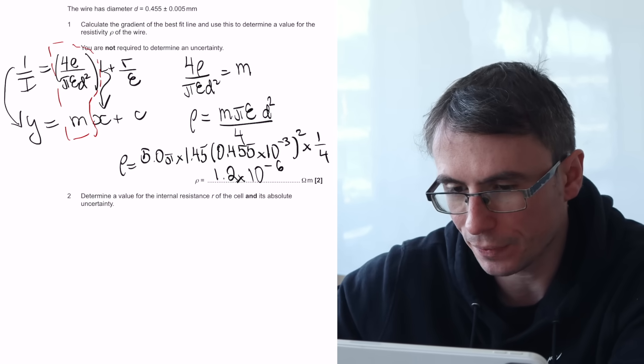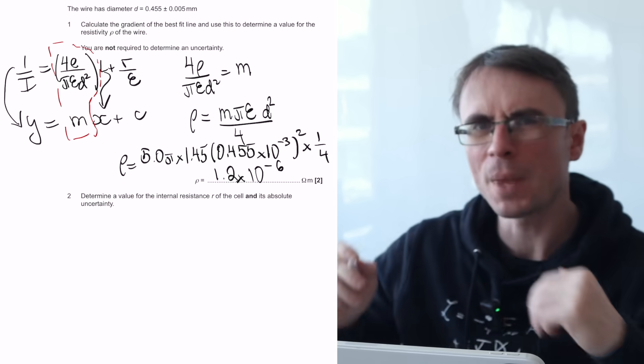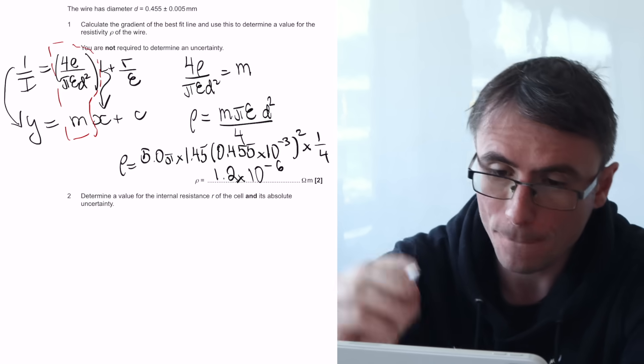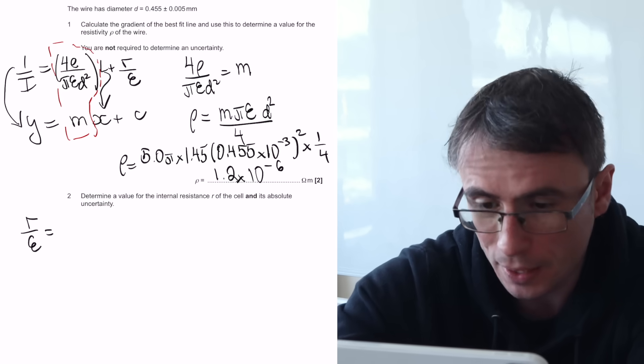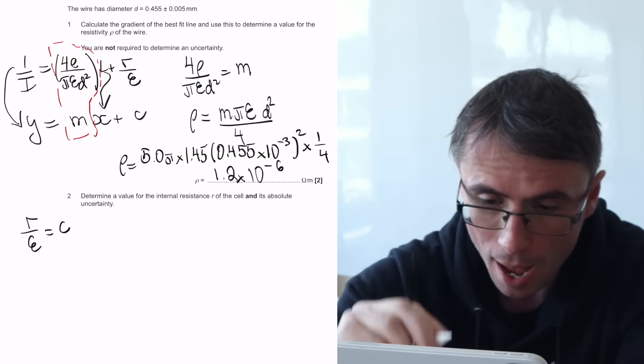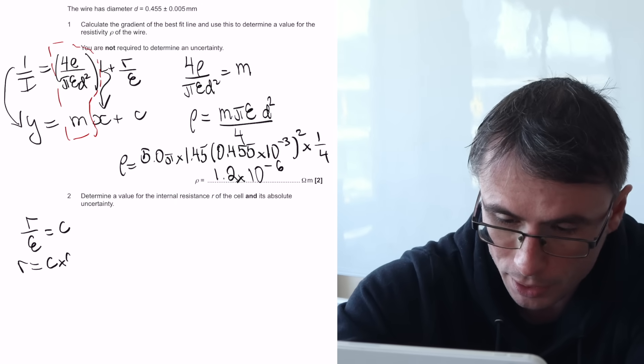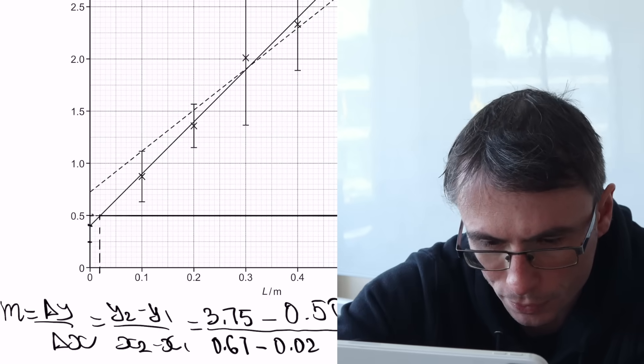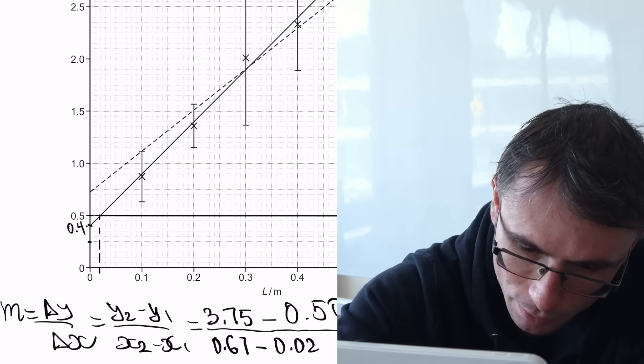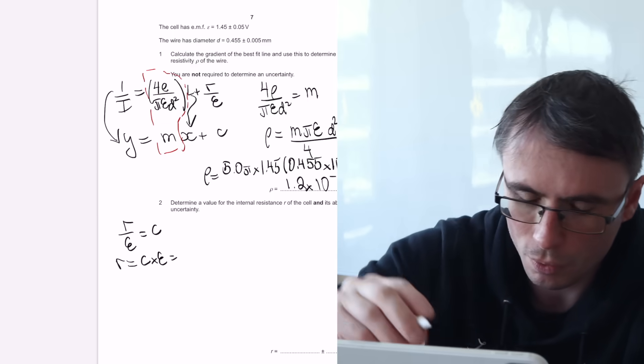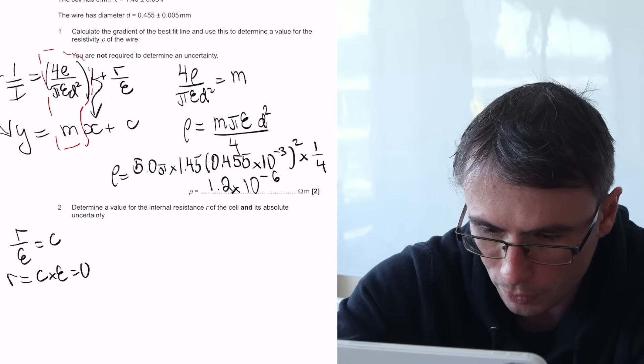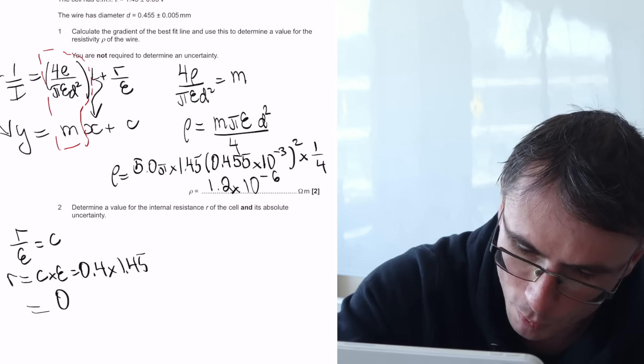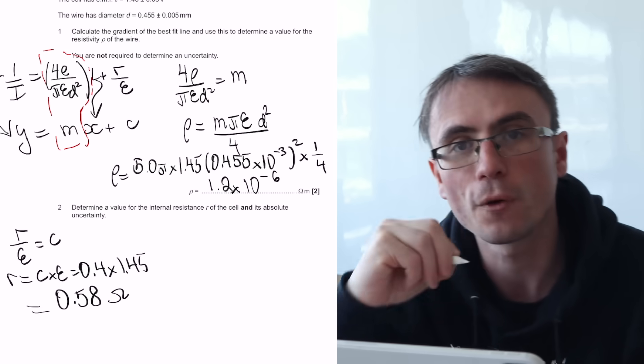Next one, determine a value for the internal resistance of the cell and its absolute uncertainty. Well, so far we've used the gradient, but now it's going to be time to actually use the intercept as well. So we can say that r over the EMF is equal to our intercept C. And well, we can say that r is going to be C multiplied by the EMF. Let's see, no pun intended, what our intercept actually is. So each of the little squares is 0.05. We're just going to make this reading 0.4. So the intercept is 0.4. So it's going to be 0.4 multiplied by the EMF, which is 1.45, which is going to give me 0.58 ohms for the internal resistance.